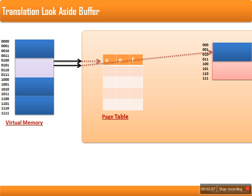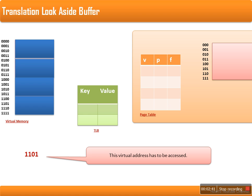In order to reduce this delay, translation look-aside buffers are used. These are actually cache memory. There are two types of cache memory: one is internal, which is inbuilt in the CPU, and the second one is external, which is on the motherboard — outside the CPU. Accessing cache memory is very much faster compared to accessing RAM. This cache memory is actually a table with keys and values. In the keys, the page number is stored, and in the values, the frame number is stored.